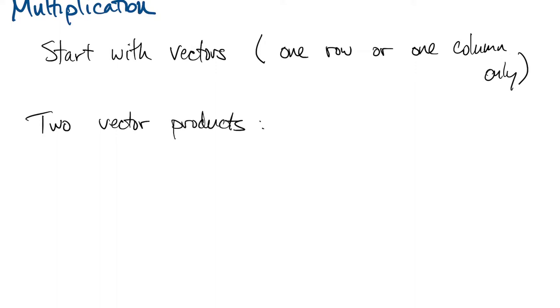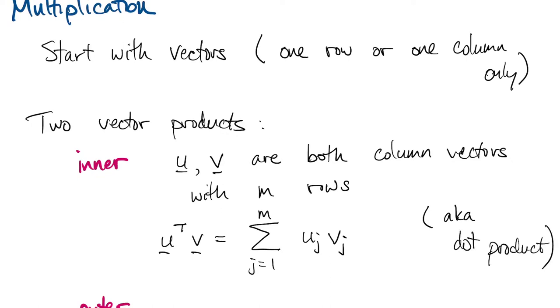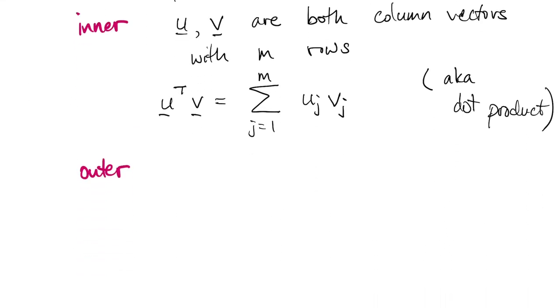There are two types of vector products. They go by the names inner and outer. For the inner product, we have two vectors that are both column vectors of the same length, both with m rows. Then we define the inner product as a sum over the products of corresponding elements. This is a generalization of what you learned in calculus as the dot product in three dimensions, and sometimes it's called the dot product in higher dimensions, too.